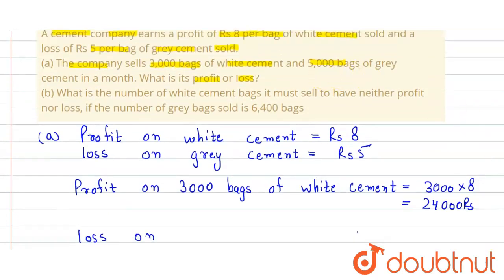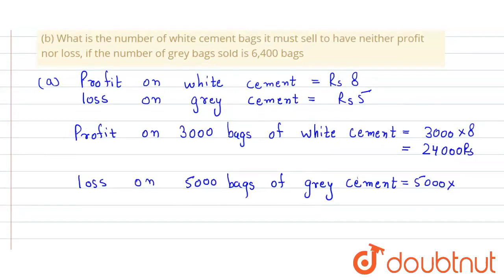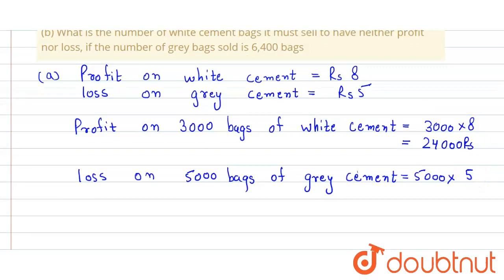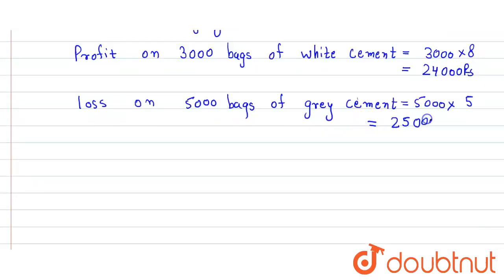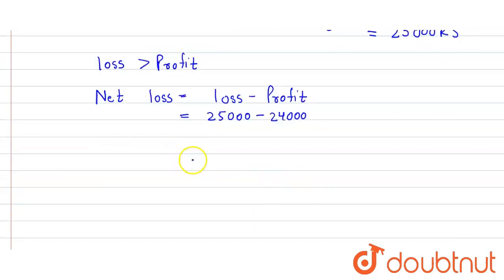The loss on 5000 bags of grey cement is equal to 5000 × 5, giving a loss of rupees 25000. Since loss is greater than profit, the net loss will be equal to loss minus profit, that is 25000 minus 24000, which equals rupees 1000. So the net loss is rupees 1000.